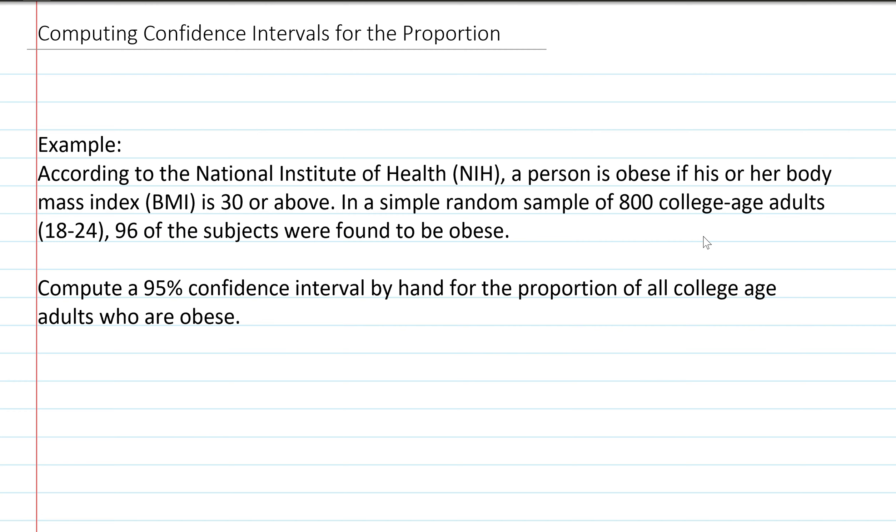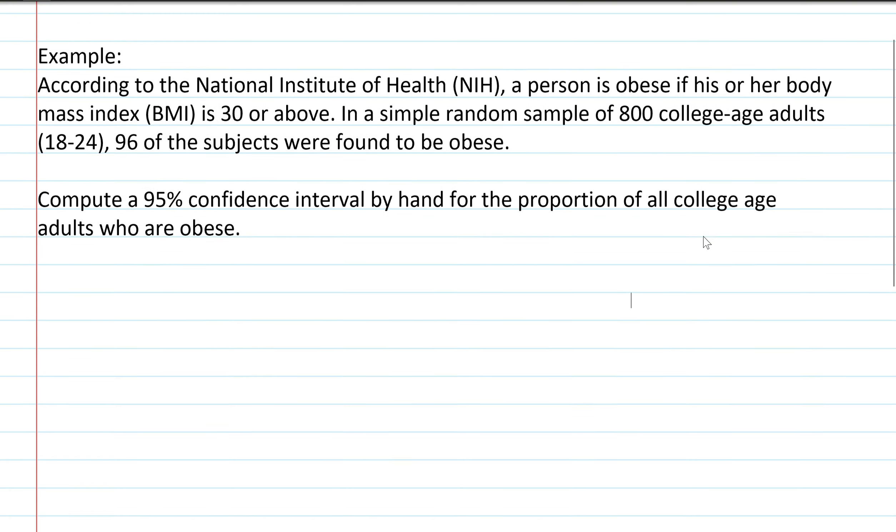In a simple random sample of 800 college-aged adults 18 through 24, 96 of the subjects were found to be obese. So we're asked to compute a 95% confidence interval by hand for the proportion of all college-age adults who are obese.